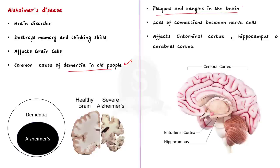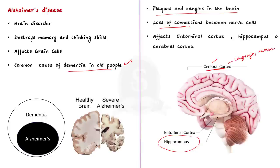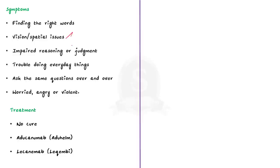Plaques and tangles in the brain are considered the main features of Alzheimer's disease. Neurons transmit messages between different parts of the brain and from the brain to muscles and organs. Alzheimer's disease leads to the loss of connections between nerve cells in the brain. This damage initially takes place in parts of the brain involved in memory, including the cortex and hippocampus. It later affects areas in the cerebral cortex responsible for language, reasoning and social behavior. Memory problems are generally the first signs of this disease, followed by a decline in finding the right words, spatial issues and impaired reasoning.